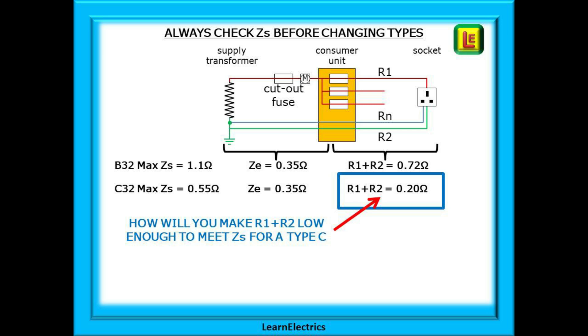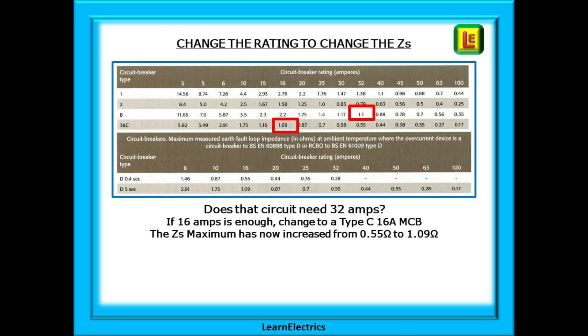You are never going to achieve this unless you move the machine next to the consumer unit. There is however another solution. Does that particular circuit actually need 32 amps? So very often a 32 amp circuit is installed as standard just because 32 amps is always installed. But what if the machinery only needed 13 amps? Could we install a C16 MCB instead and not alter any of the wiring?